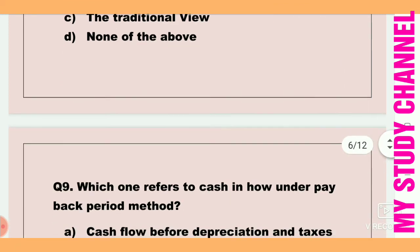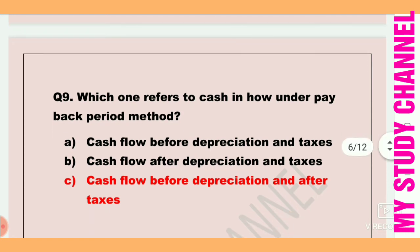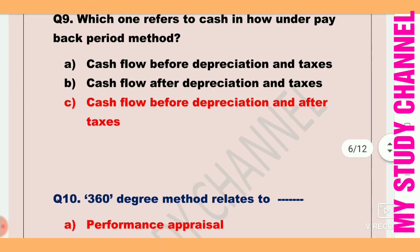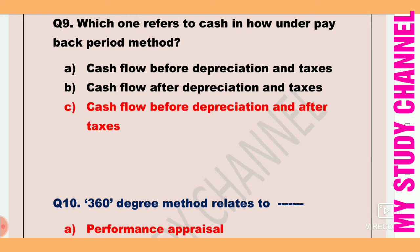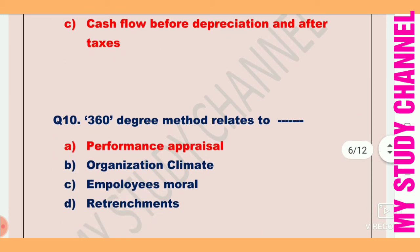Next question: Which one refers to cash inflow under the payback period method? Option A is cash flow before depreciation and taxes, B is cash flow after depreciation and taxes. The answer is option A — cash flow before depreciation and taxes.